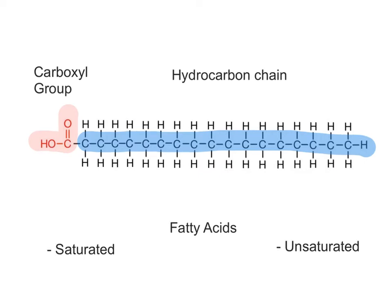Fatty acids are classified as being either saturated or unsaturated. A saturated fatty acid, like the one shown here, has only single covalent bonds between the carbon atoms of its hydrocarbon chain. Because of this, each of the carbon atoms in the saturated fat is saturated, or bonded, with all of the hydrogen atoms that they can bond to, and cannot form any double covalent bonds. Think of the word saturated like a sponge that has absorbed all of the water it can hold — it is completely saturated. In a similar way, the fatty acid has absorbed, or bonded with, all of the hydrogen atoms that it can hold.